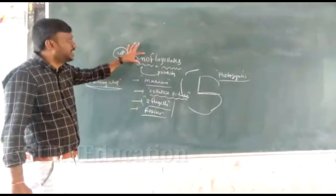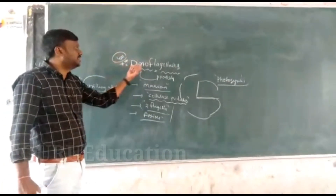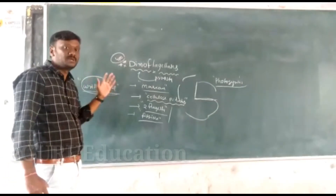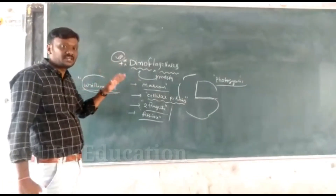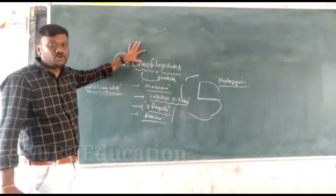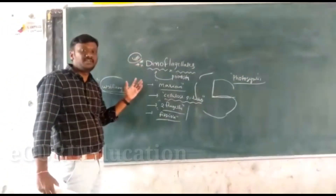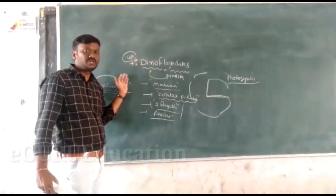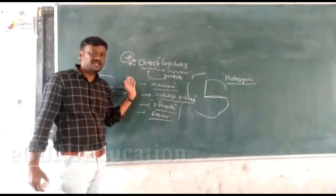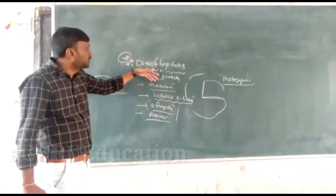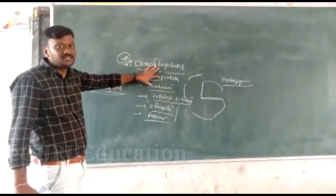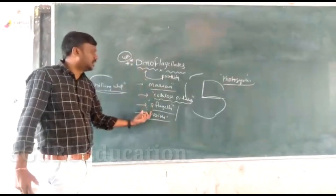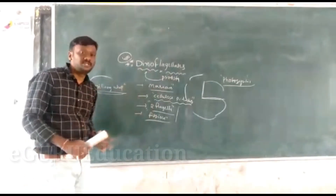So this is the total information of dinoflagellates. These dinoflagellates are of two types of characters — one is plant-like and at the same time animal-like. Two types of characters are available in dinoflagellates. We have already studied in the general characters of Protista that Protista also has two characters: animal characters and plant characters. So dinoflagellates also have both animal and plant characters. So dear students, we have noted these points. Thank you.